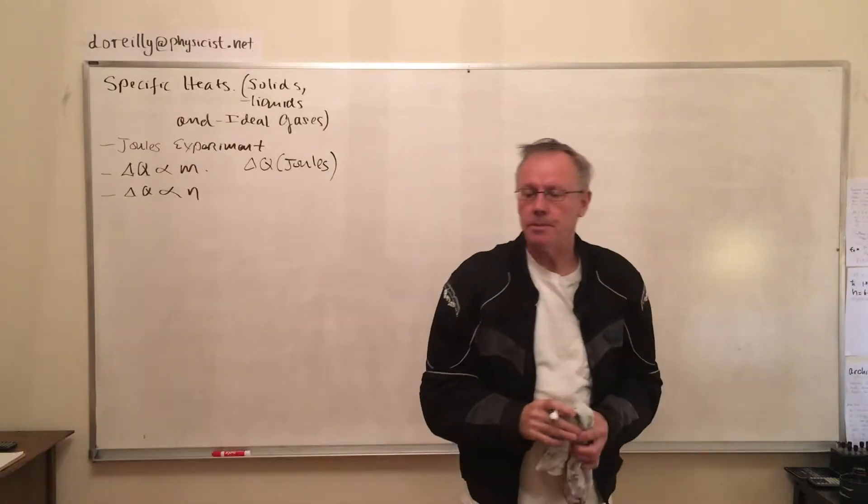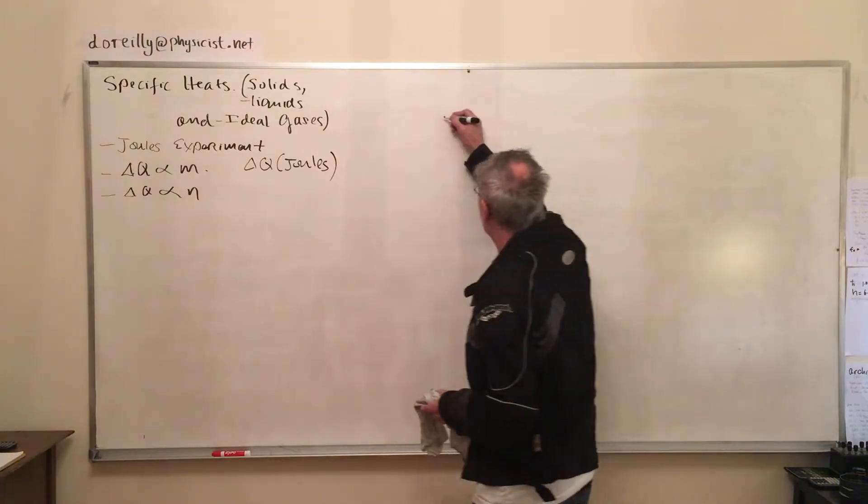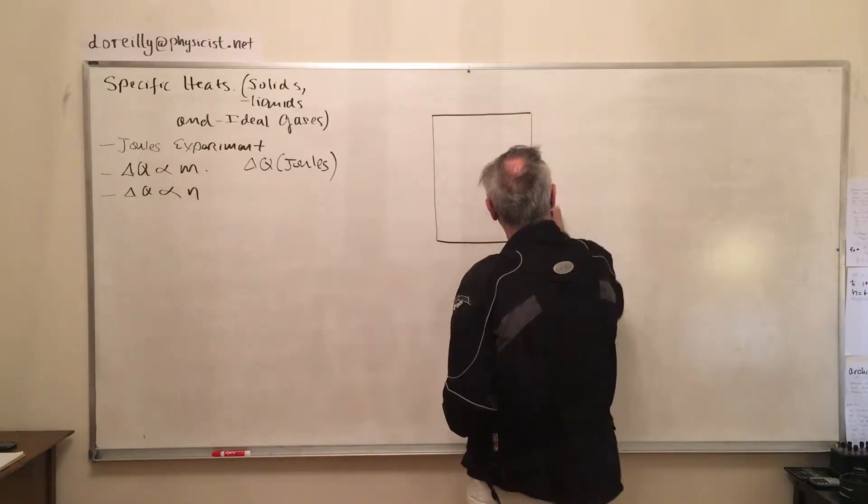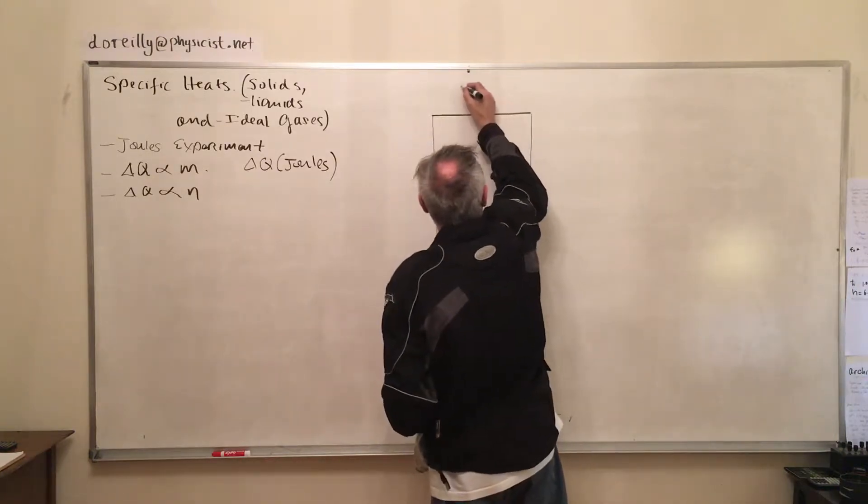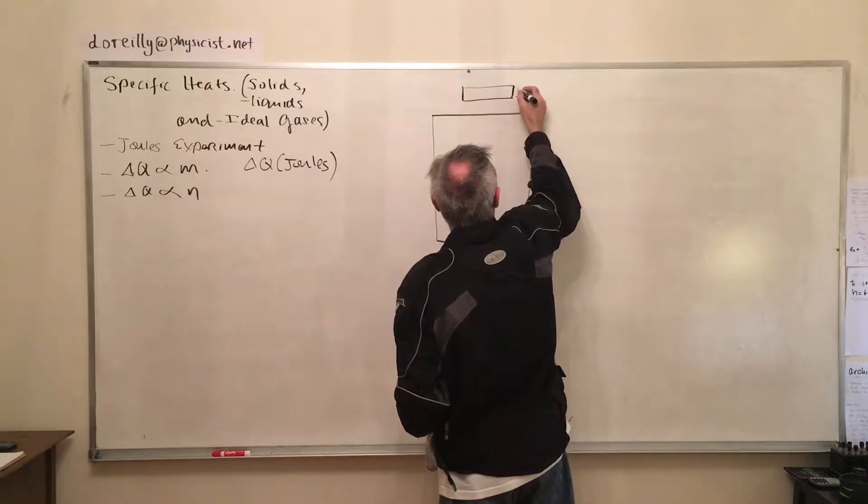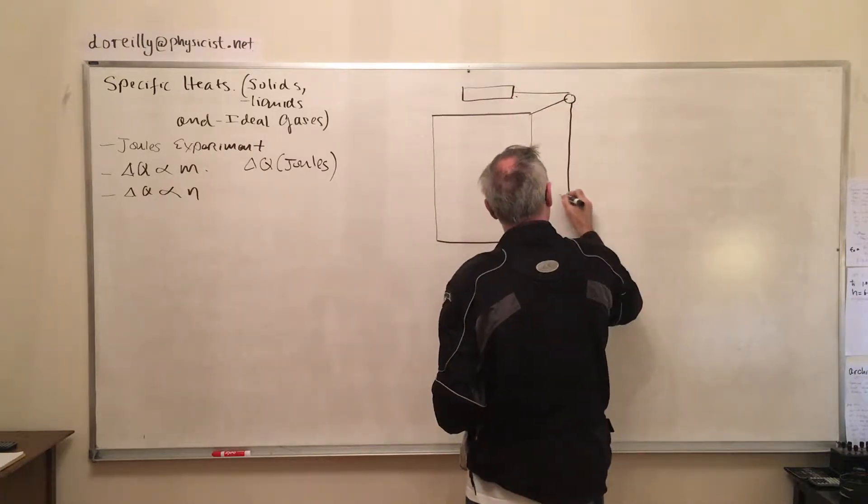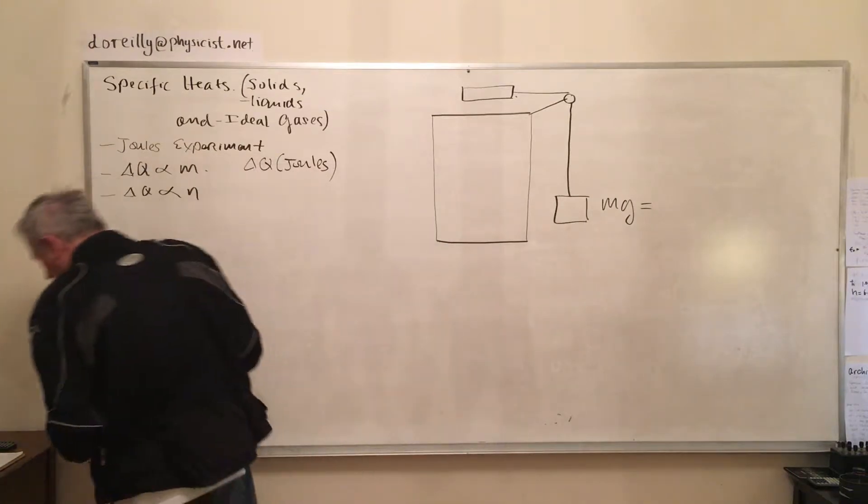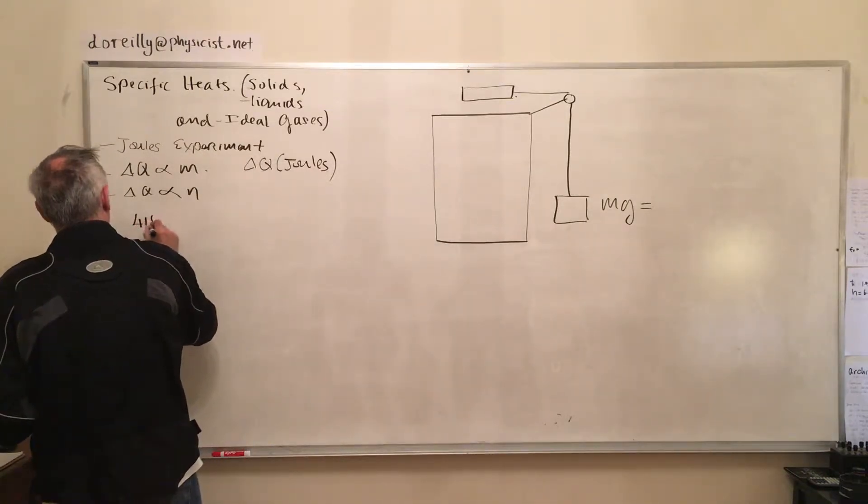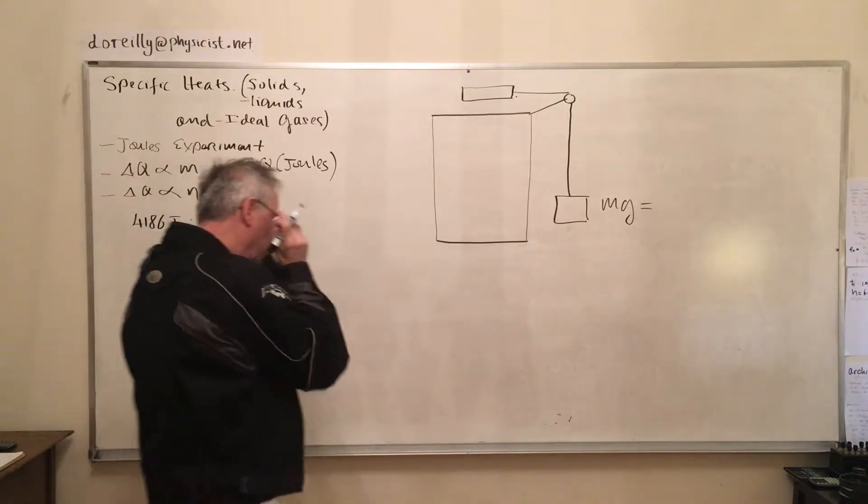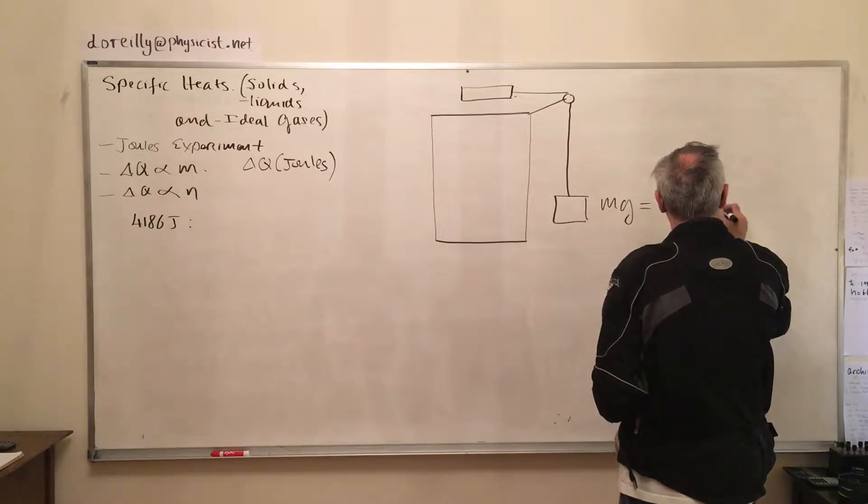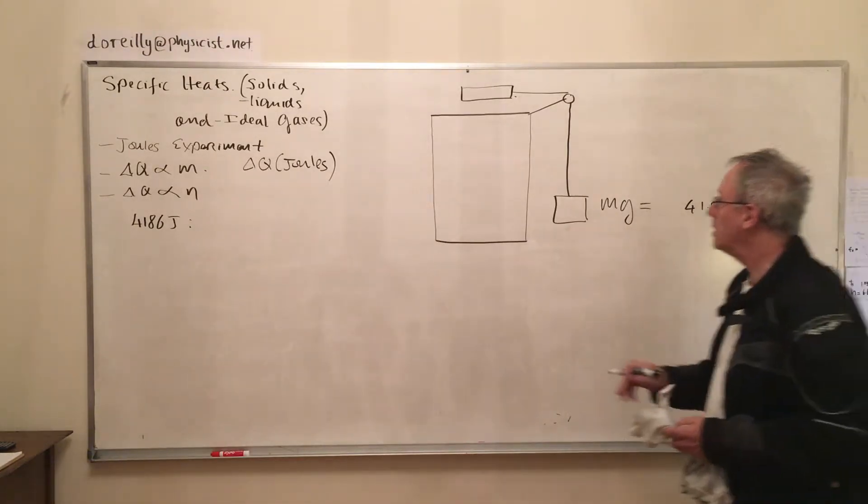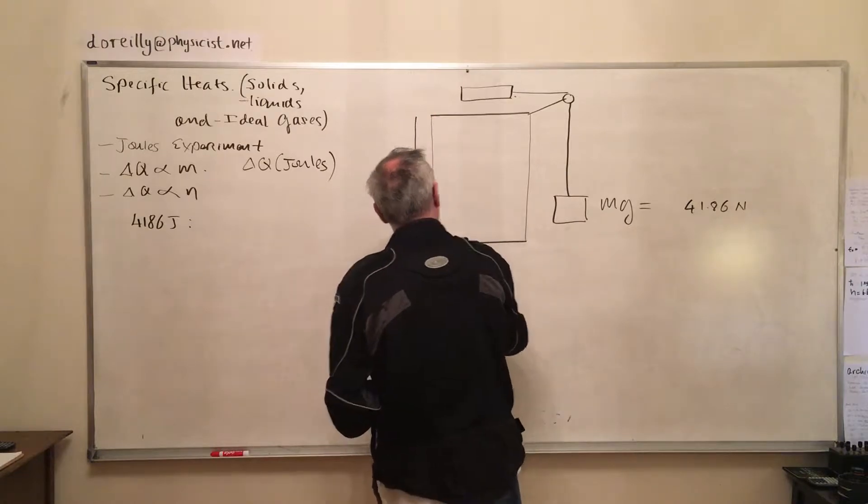So we have to harp back to Joule's experiment. Joule carried out an experiment. I know he went on a honeymoon to Switzerland and carried out these experiments between the top and the bottom of a waterfall. Here we have a weight, a weight of 41.86 newtons. I just chose that number for convenience, because here I have water in a tank, insulated.